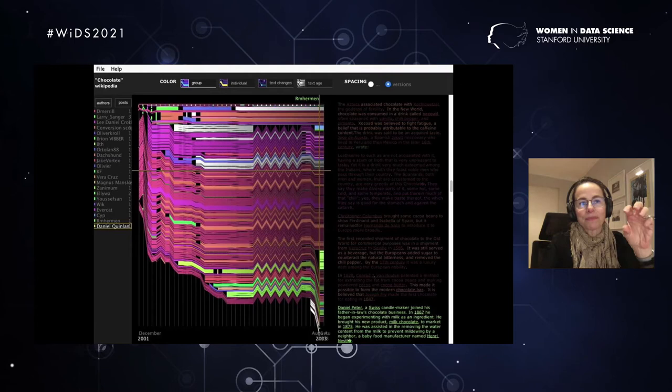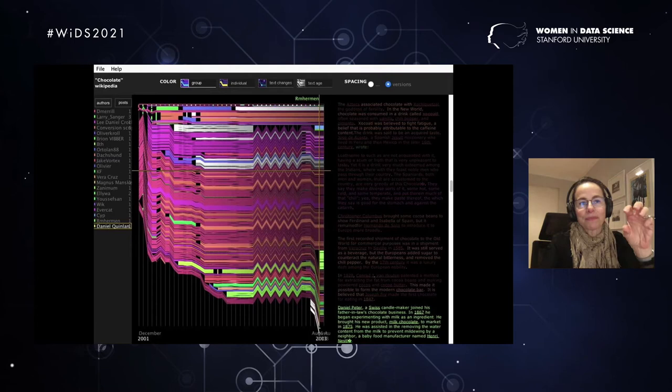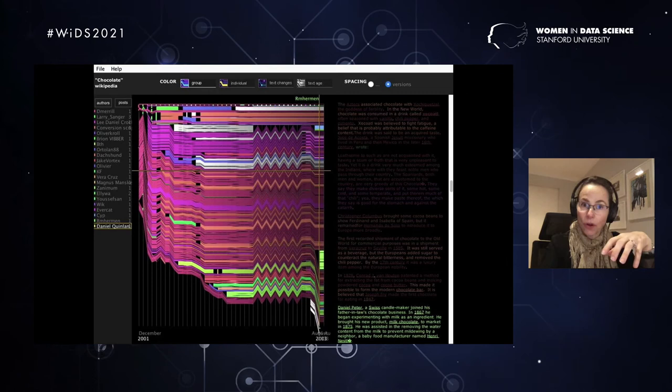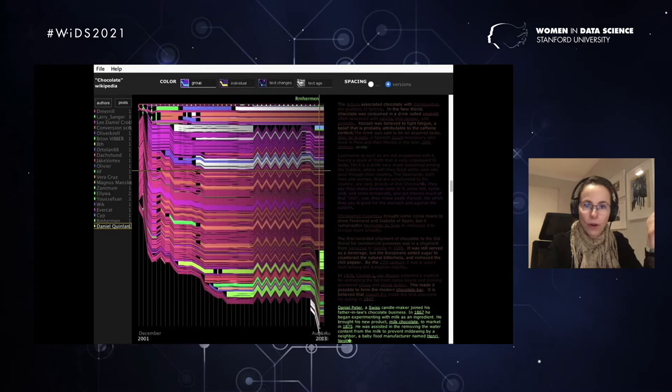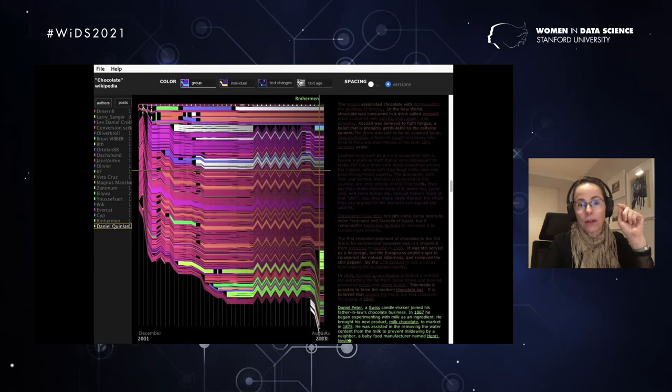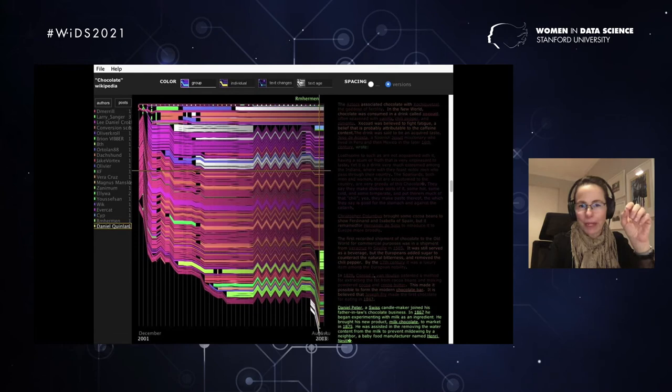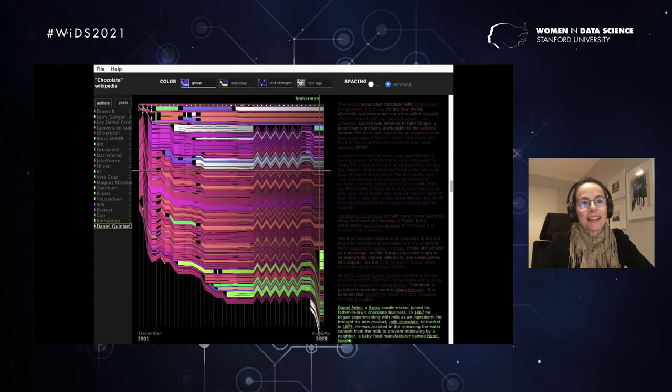One of the things that we did after creating this visualization was to download all of Wikipedia and start looking at some of the patterns we saw. So for instance, the mass deletion being reverted so quickly, we ran an overall analysis of the entire website and found out that all mass deletions on Wikipedia at that point, back in 2003, were being fixed within three minutes on average, which is pretty impressive. And so this gives you an example of a scientific data visualization.